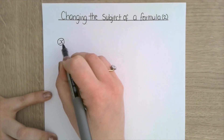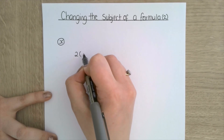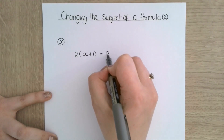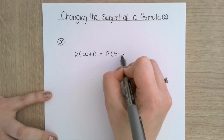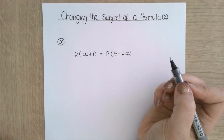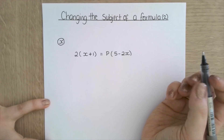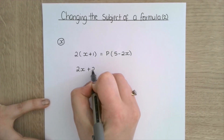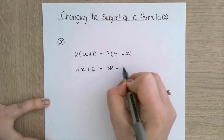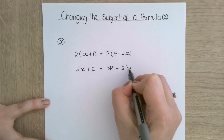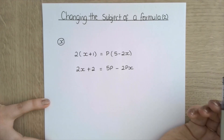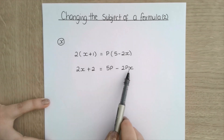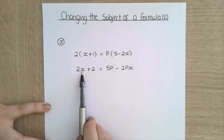So I'm going to make x the subject of this formula, and the formula is 2 brackets x plus 1 is equal to p brackets 5 minus 2x. Obviously here I have got brackets. I want to expand the brackets first, so I get 2x plus 2 is equal to 5p minus 2px. I want to make x the subject so I want to aim to get all of the x's onto the same side.